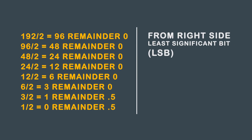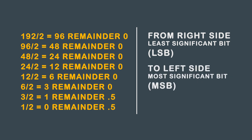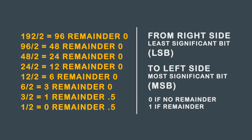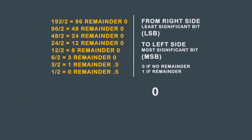Now, working from the right side or least significant bit, the LSB, to the left side or most significant bit, the MSB, write down a 0 if no remainder, and a 1 if there is a remainder.